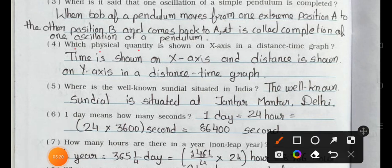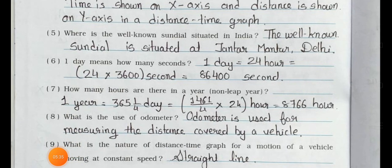Now see number four. Question number four: which physical quantity is shown on x-axis in a distance time graph? Answer is: time is shown on x-axis and distance is shown on y-axis in a distance time graph.